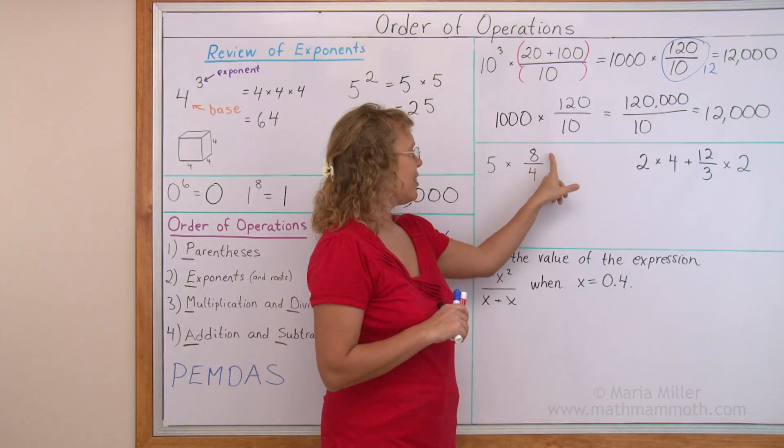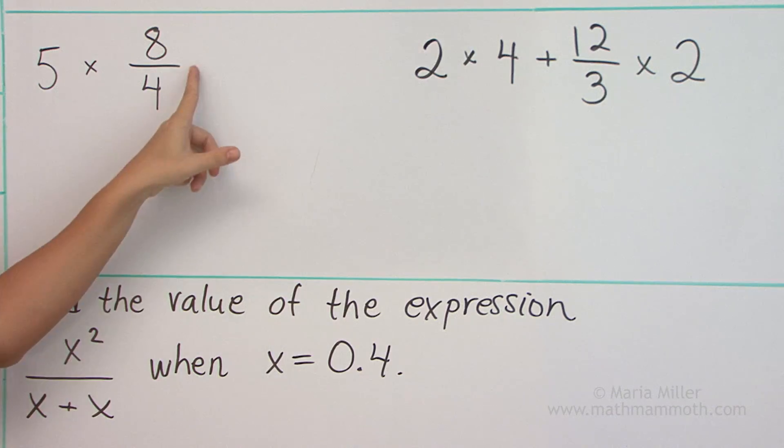5 times 8 divided by 4. That's pretty easy, right? If you divide first, we get 2 here. 5 times 2 equals 10. If you multiply first, you get 5 times 8, 40 divided by 4 equals 10.